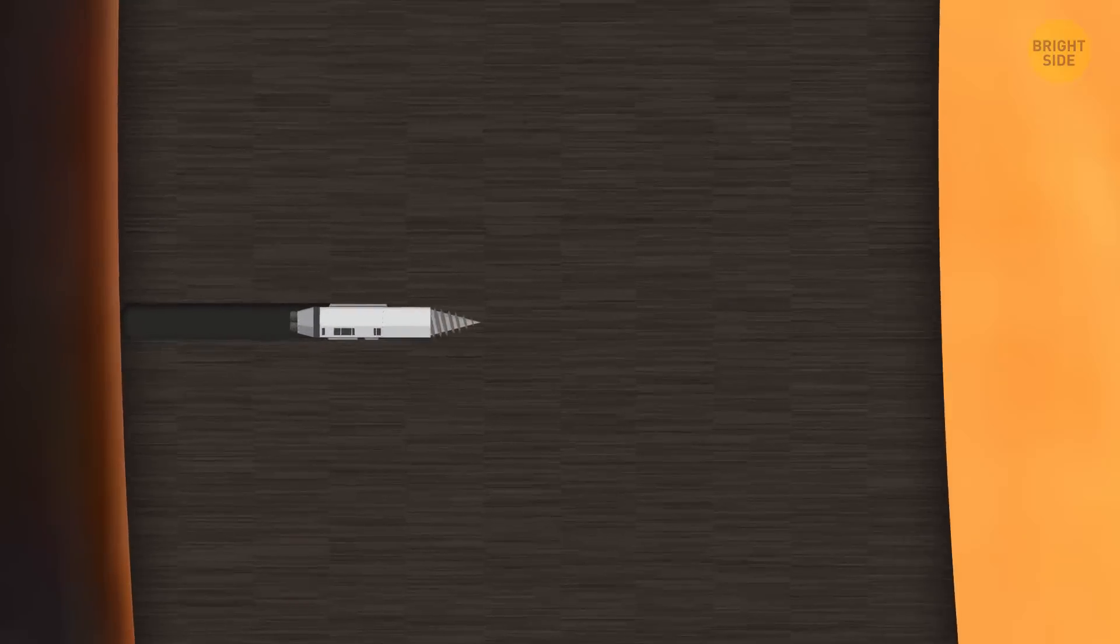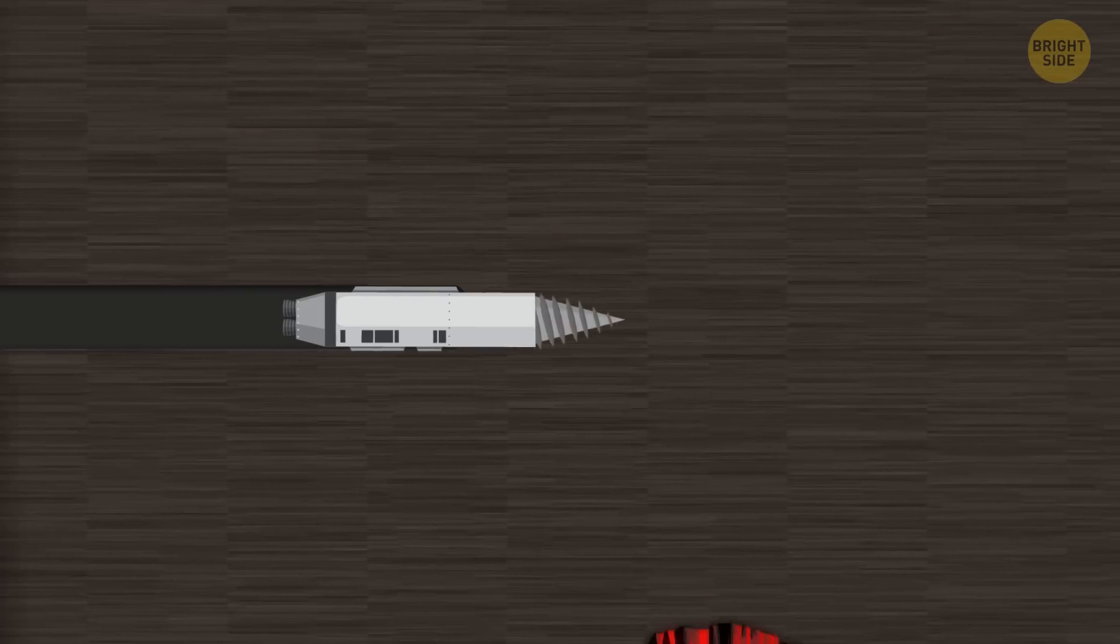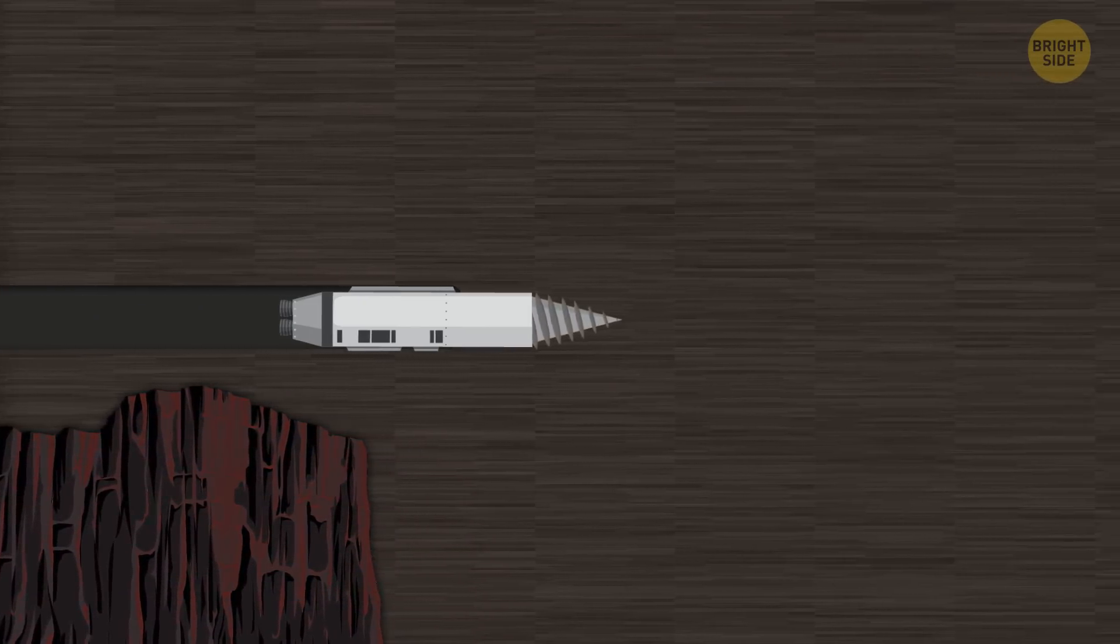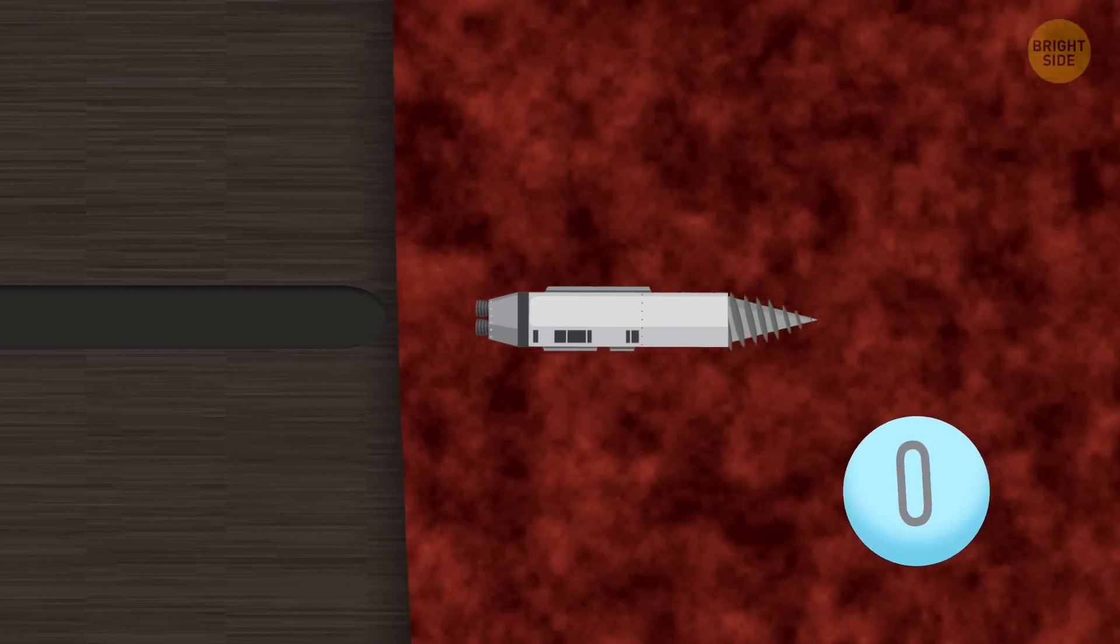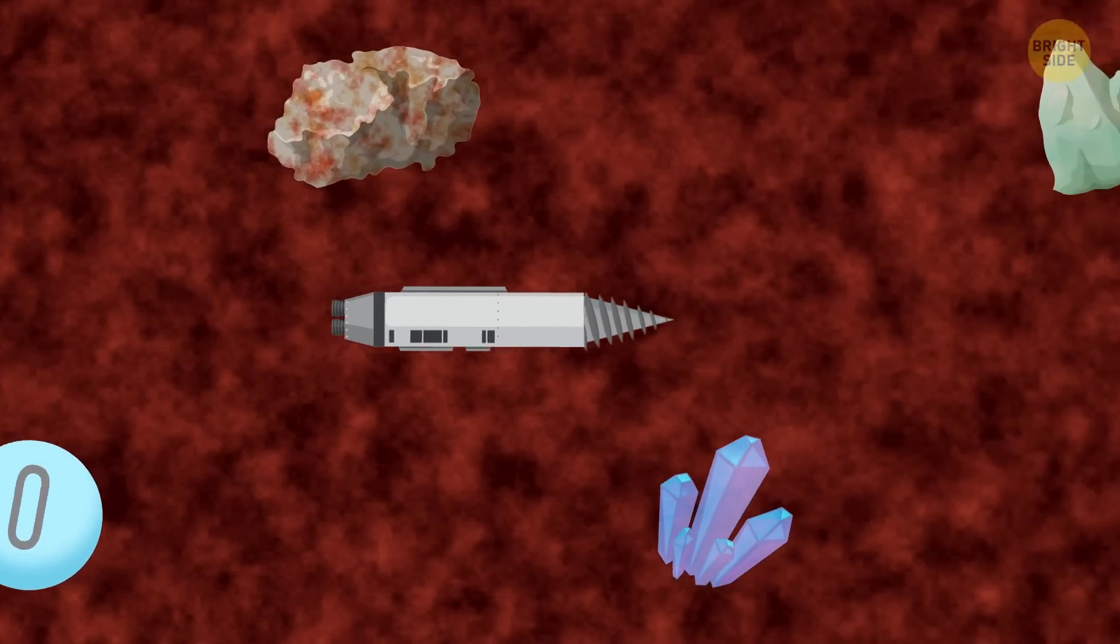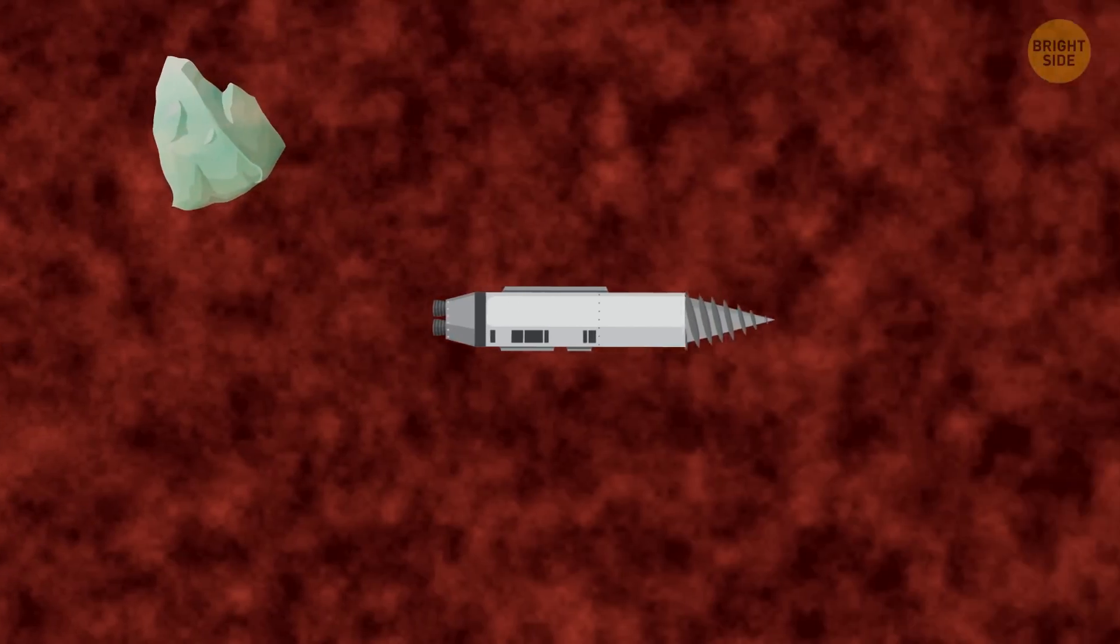You start drilling through the planet's thin crust. It's made up of volcanic basalt rock. Pretty soon, you reach the mantle. It's composed of oxygen, silicates, and other minerals. Something like a soft, rocky toothpaste.